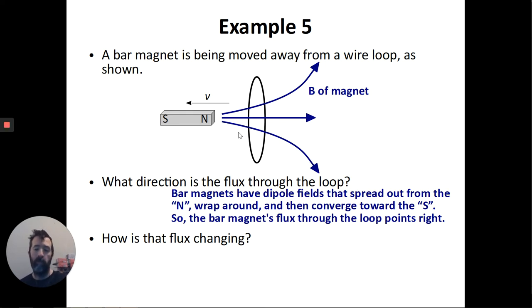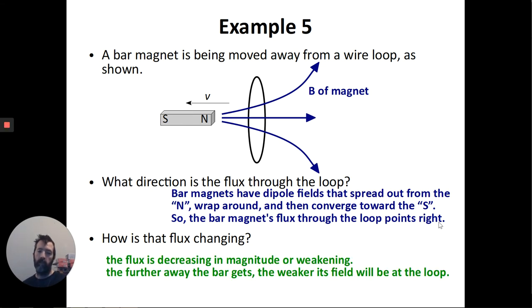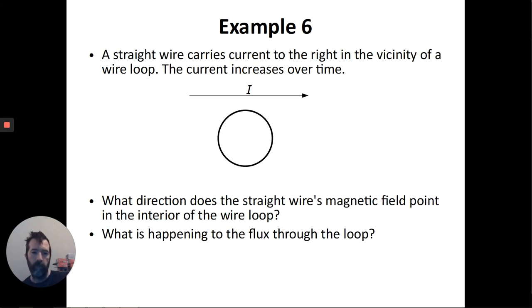So this is what part of the bar magnet's magnetic field looks like. I haven't drawn the whole field. That's what part of it looks like. And these field lines are going to the right. So the flux through the loop points right. And then, like I said, the flux is decreasing in magnitude because as you pull the magnet away, the field gets weaker.